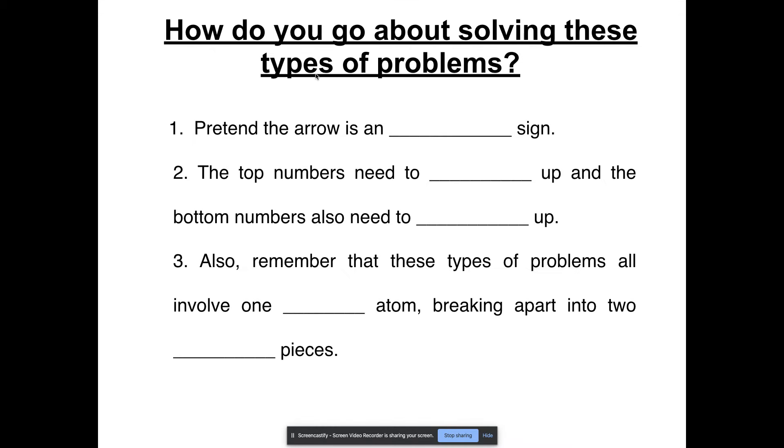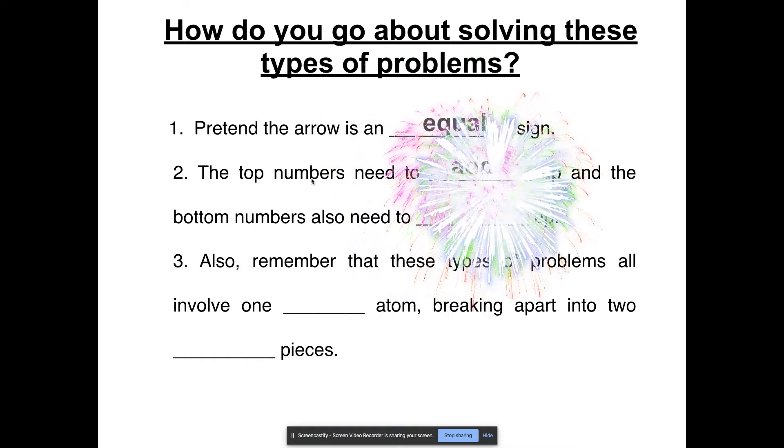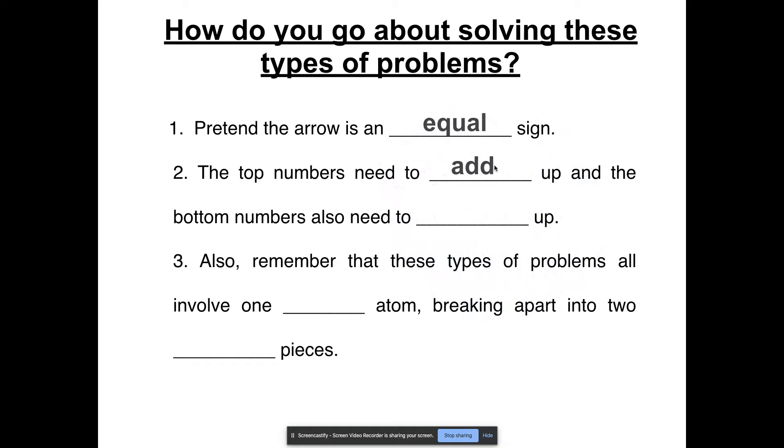So how do you go about solving types of problems like these? Well, the first thing you need to do is pretend that the arrow is an equal sign, just like in a math problem. Second, your top numbers, that would be your mass numbers, they need to add up and equal each other. And then the bottom numbers, those are your atomic numbers, they need to add up and equal each other. And then also remember that these types of problems all involve decay. So you have a large atom that's breaking up into two or more smaller pieces.